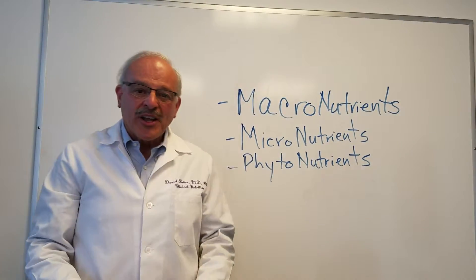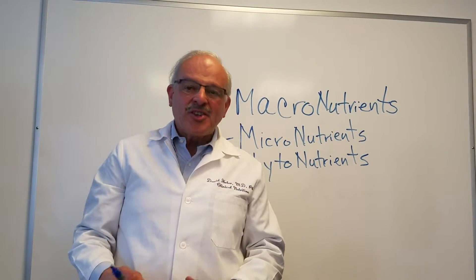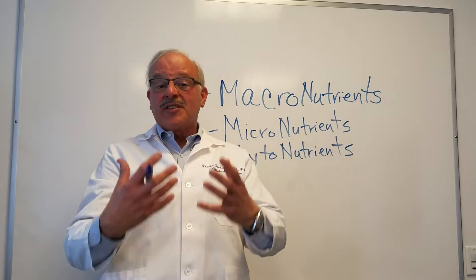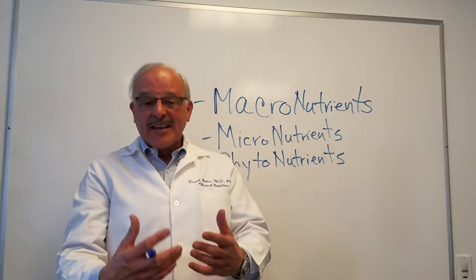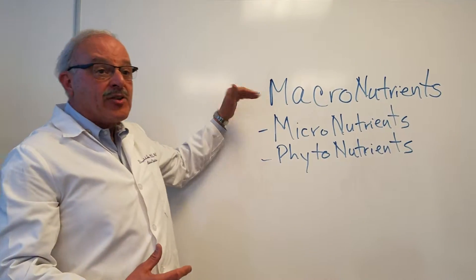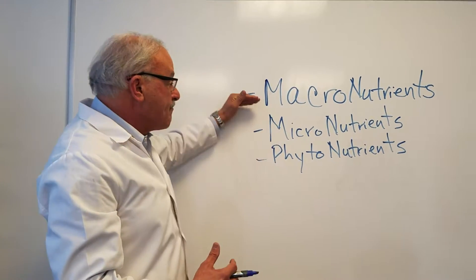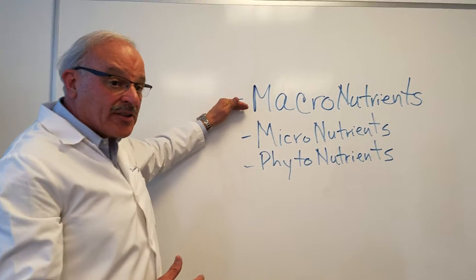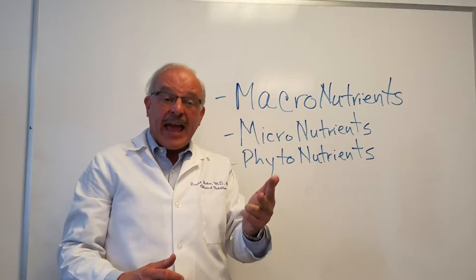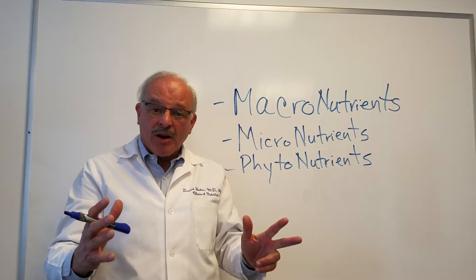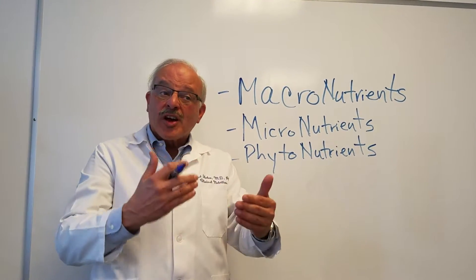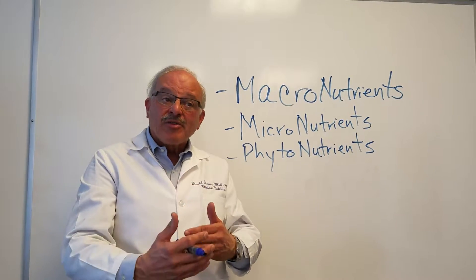Hi, this is Dr. David Heber again, and I'm here to talk to you today about how we classify different nutrients in our diet. The way we look at them is by the amounts in the diet and their nature. So we have macronutrients — those are protein, carbohydrate, and fat. They make up the largest part of our diet, and they interact with each other in very interesting ways.